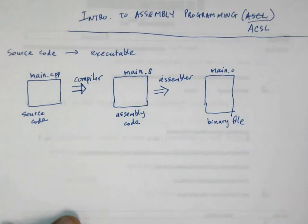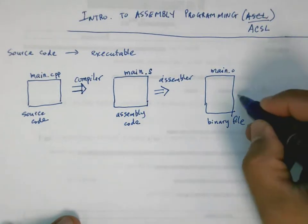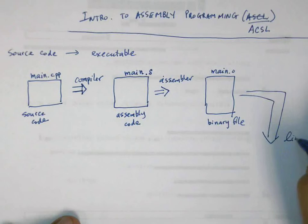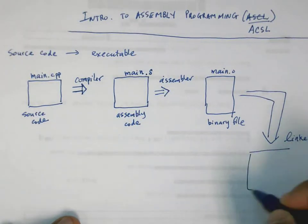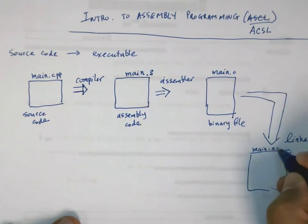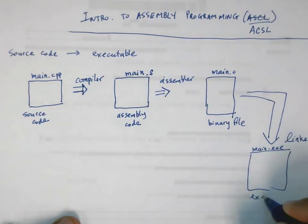After that, it gets linked. Then finally you get something like hello or main.exe—this is the executable file. This is the file that the computer actually runs.